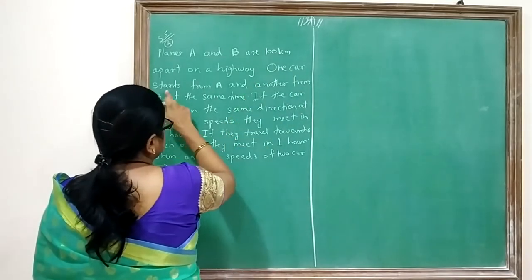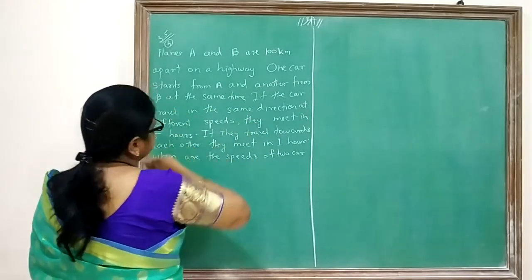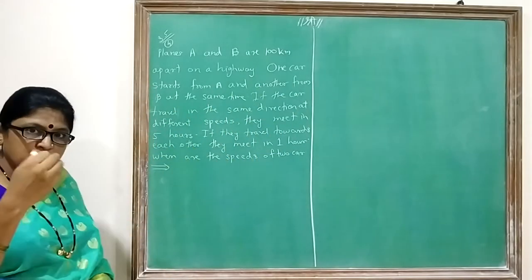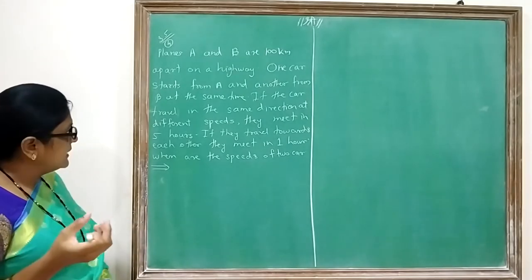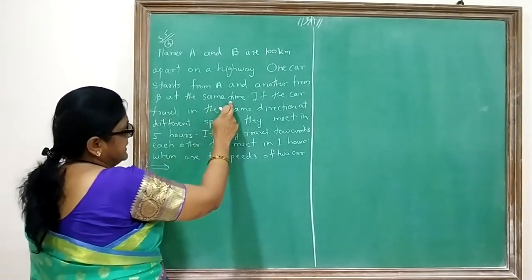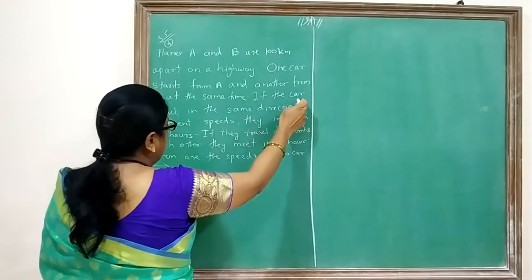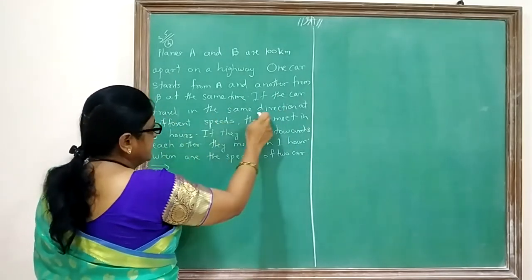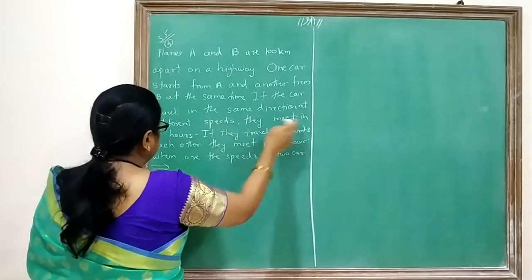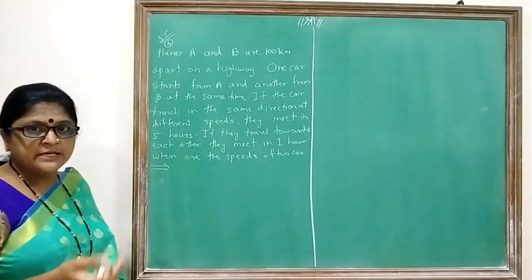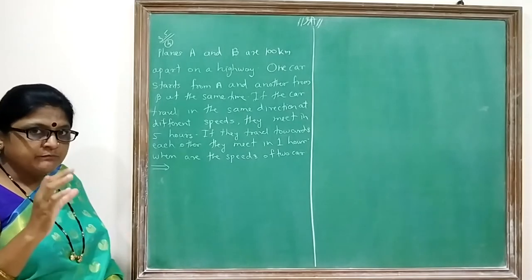One car starts from point A and another from point B, at the same time. If the cars travel in the same direction at different speeds, they meet in 5 hours. The time for this case is 5 hours.